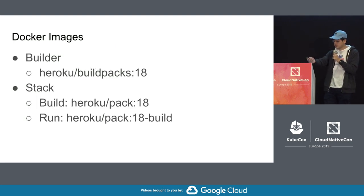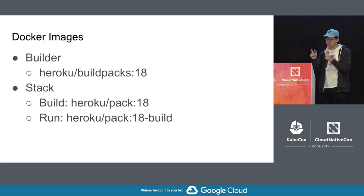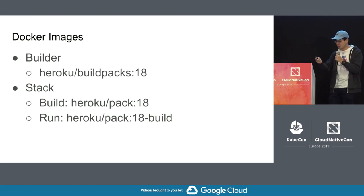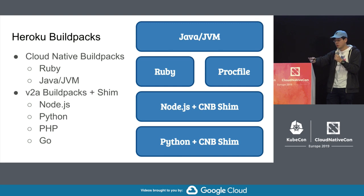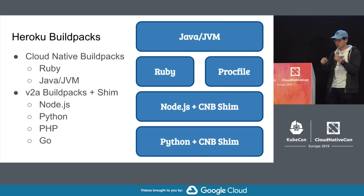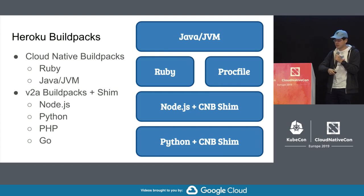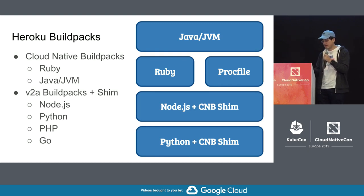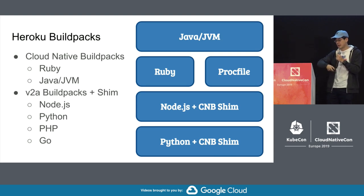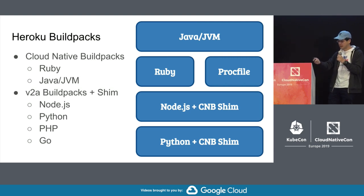These are the Docker images we've created as part of our builder image. The builder image — heroku-buildpacks-18 — is the one you pass to the --builder flag when you run pack build, which references the other two images we've walked through. We've written Cloud Native Buildpacks specifically for Ruby and Java, and for existing V2 Buildpacks — Node, Python, PHP, Go — we've written a shim that allows us to run those V2 Buildpacks inside the V3 launcher.